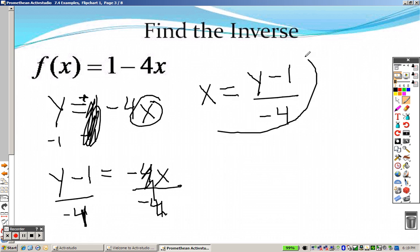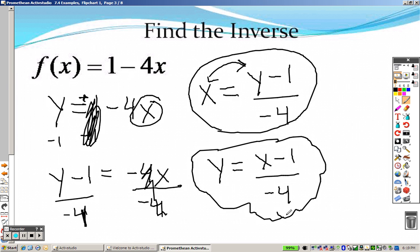Now there's the inverse, but if you wanted to graph that, if you wanted to graph it, you can't graph anything in terms of x. So what that means is you need to flip-flop the x and the y. So if you wanted to graph it, this is what you'd have to write down in order to graph that inside the little cloud here.